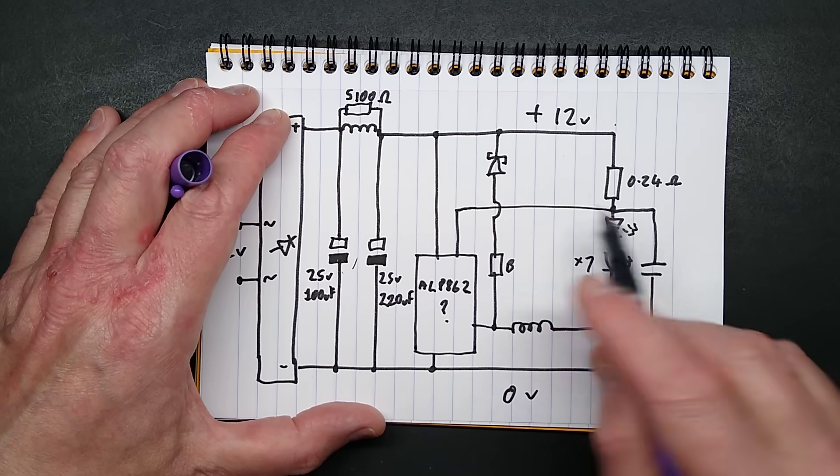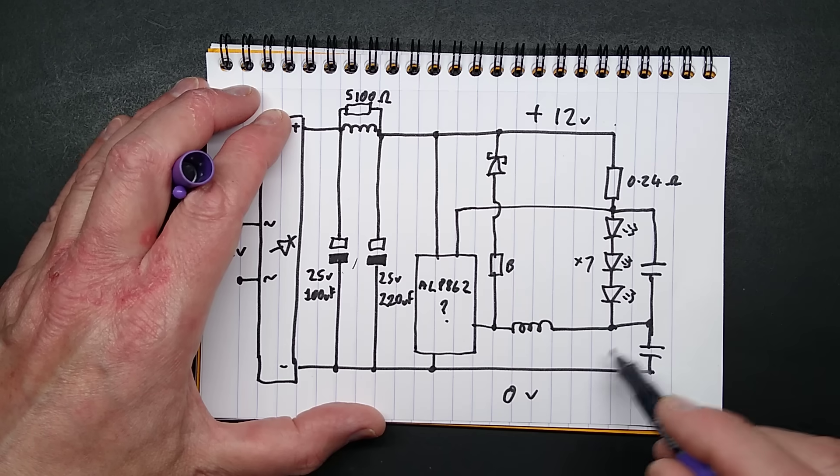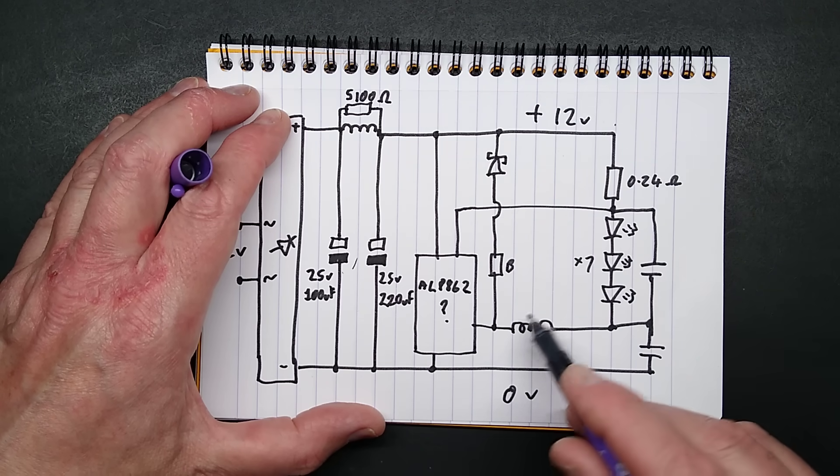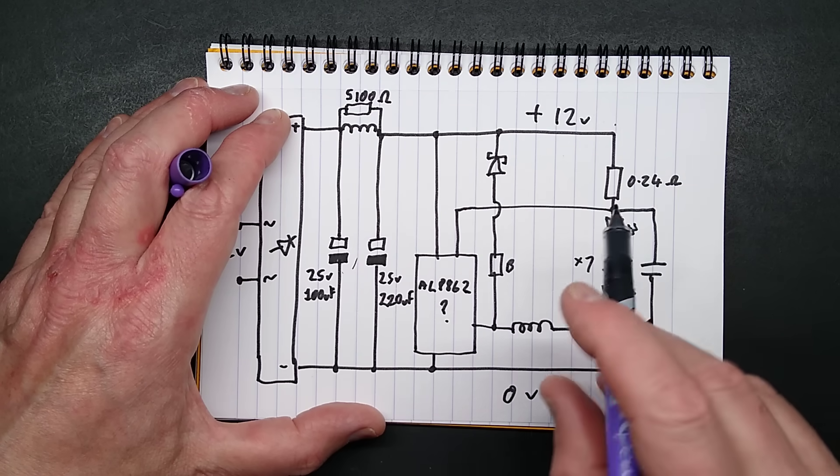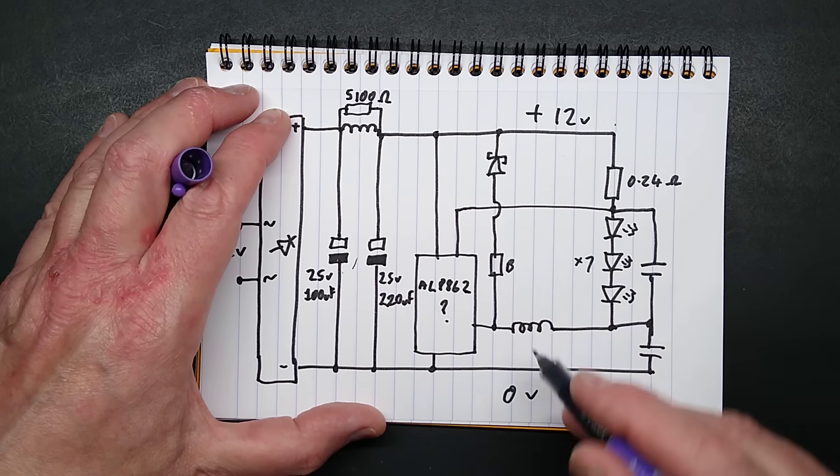There's the two little tiny capacitors. And the current flows through the inductor, but initially because the inductor has no magnetic field in it, it starts building up the magnetic field and that pushes back a bit against the current. So it limits how much current can flow.